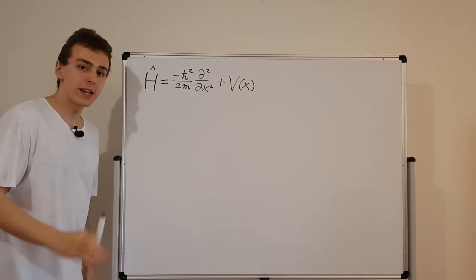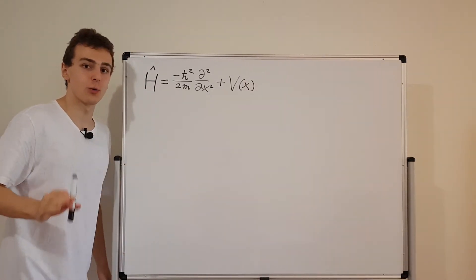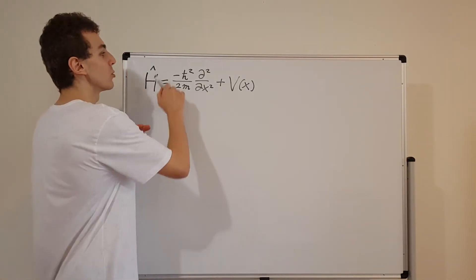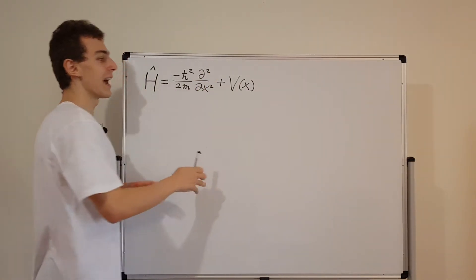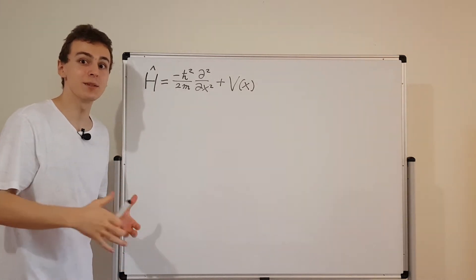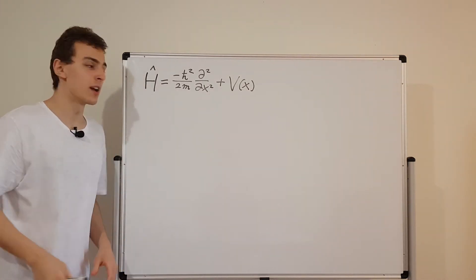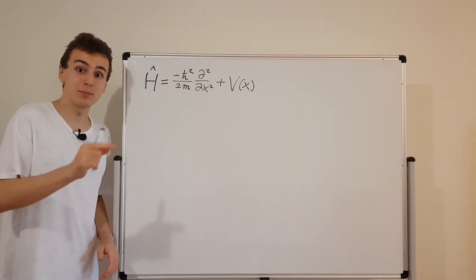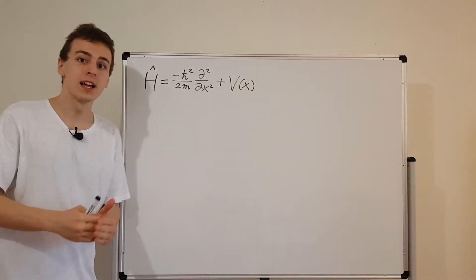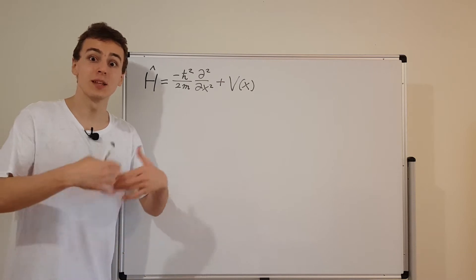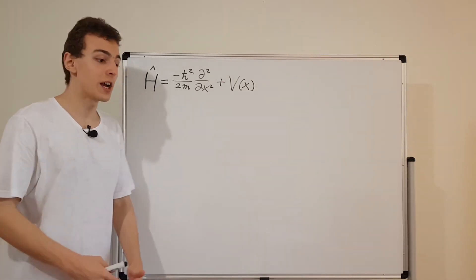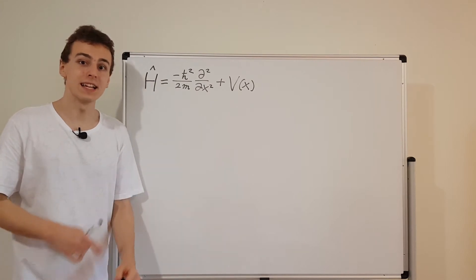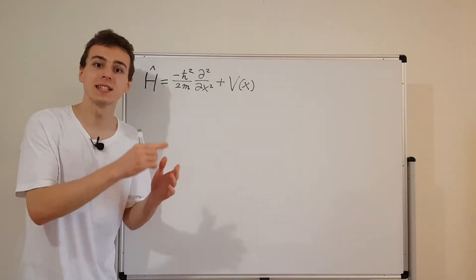Now I'm going to write down the time independent Schrödinger equation, and then we're going to have a look at some of the similarities between these terms and the terms inside the time independent Schrödinger equation. Where did we see the time independent Schrödinger equation first in this playlist? When we were solving the Schrödinger equation using the method of separation of variables, we actually got the time independent Schrödinger equation, and inside that equation was just lowercase psi.